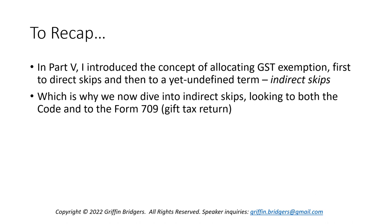To recap so far, in part five I introduced the concept of allocating your GST exemption, which is equal to your estate tax exclusion amount. You'd first allocate that to direct skips and then to a yet undefined term known as indirect skips. We can do that manually or we can rely on the law to do it automatically for us, as we briefly looked at last time. But now we need to dive into the how and look at specifically what indirect skips are.